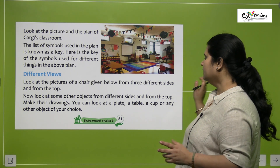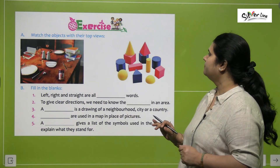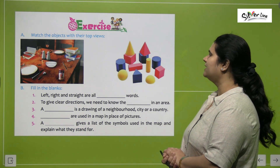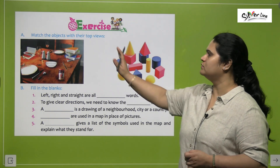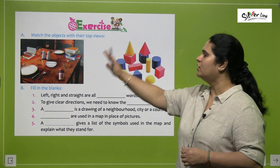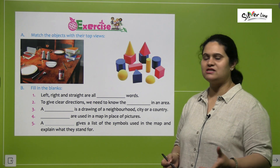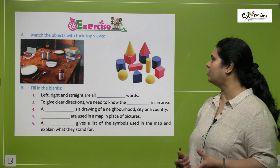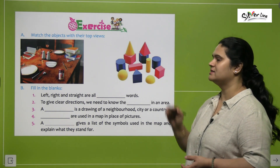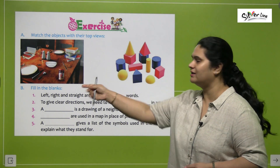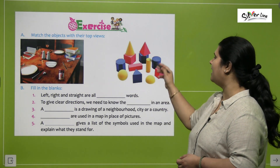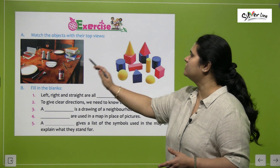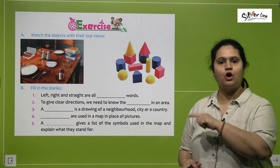Now this is a small exercise, children. You have to match the objects with their top views — yahan par kuch objects given hain, uske top views se aapko match karne hain. So suppose this is a bowl — ek bowl hai — iska top view kaisa hoga, is tarah se hoga. This is a jam bottle — it is cylindrical in shape — so it will have a cylindrical top view. So this way you can try and match the objects with their top views.